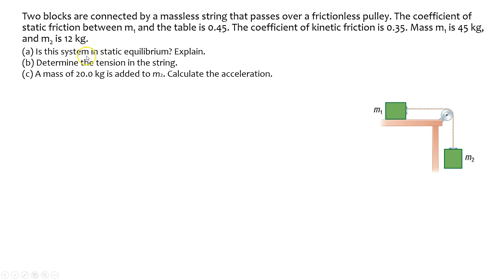The coefficient of static friction between M1, mass 1, and the table is 0.45. The coefficient of kinetic friction is 0.35. Mass M1 is 45 kg, and M2 is 12 kg.